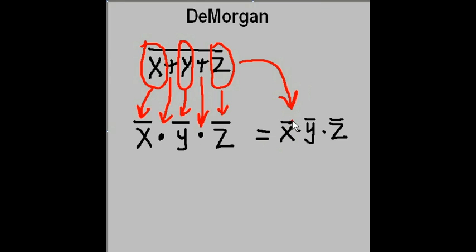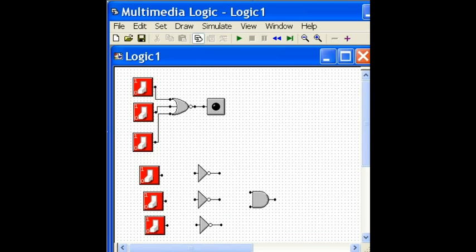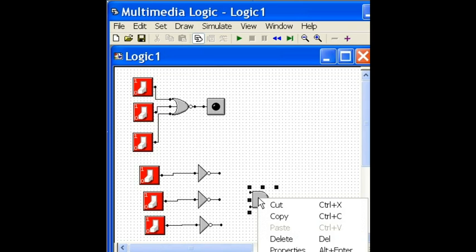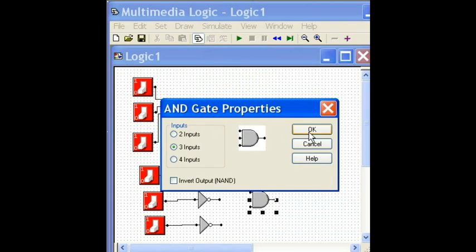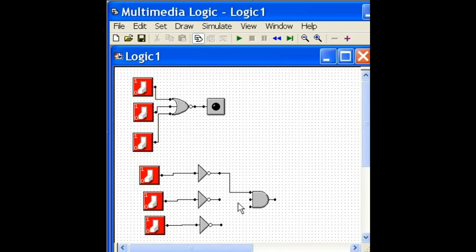We're going to take X and NOT it, Y and NOT it, Z NOT it, and then we're going to AND all these guys together, which is exactly what we're doing here. Let's change my AND gate into a three input AND gate. There we go. And I'm going to put an LED there and connect these up.